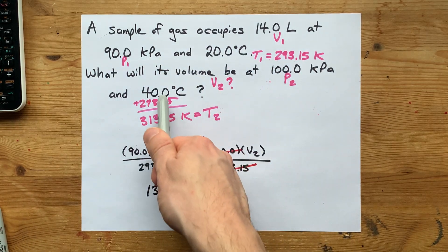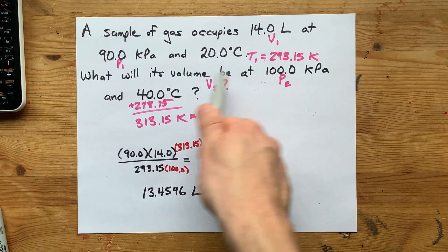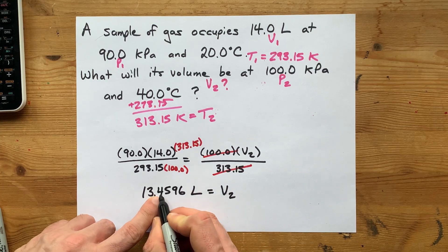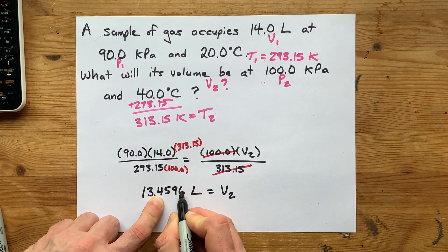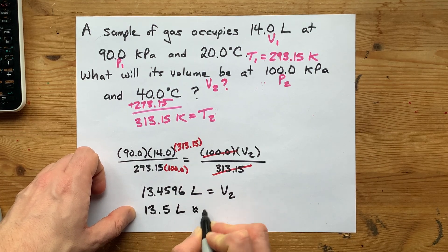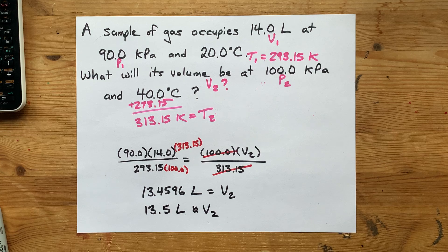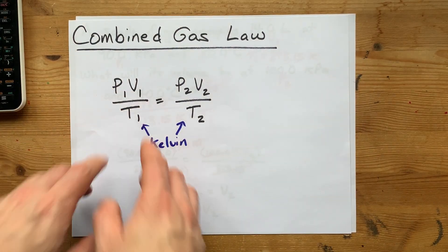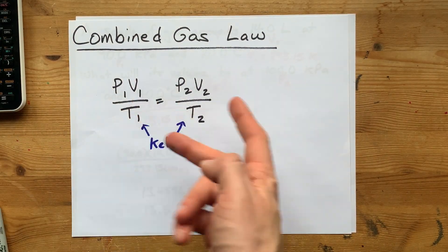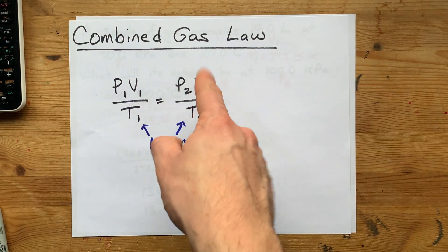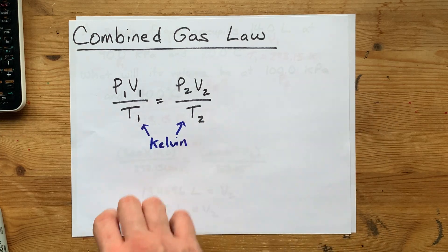Rounding to three significant figures — the 4 is followed by 5-something so it rounds up — V2 ≈ 13.5 liters. The combined gas law states that the ratio of pressure times volume divided by temperature is the same for a particular sample of gas, no matter what permutation of P, V, and T you happen to be at. If you're given five pieces of information about a gas, you're likely being asked to use this combined gas law.